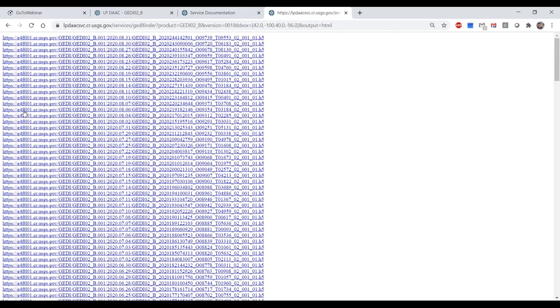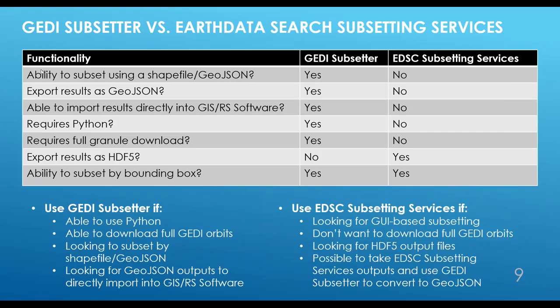Now we've done our GEDI spatial query and found the data intersecting our region of interest. There are two different workflows available for subsetting the data. I recommend using the GEDI Subsetter data prep script if you're comfortable working with Python in the command line, are able to download the large full GEDI orbits, are looking to subset by a shapefile or GeoJSON region of interest, and want output files exported as GeoJSON that can be imported and visualized directly in your GIS or remote sensing software of choice.